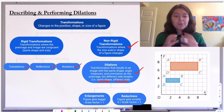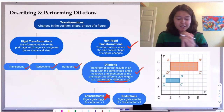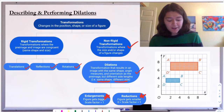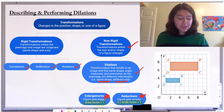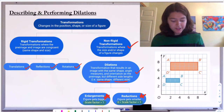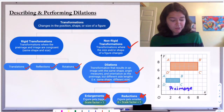When we dilate a shape, we're resizing the shape. We're either making it bigger, which is called an enlargement, or we're making it smaller, which is called a reduction. We'll be dealing with those more technically by looking at the scale factor. When we have a scale factor greater than one, our shape is going to get bigger. We have ABCD as our pre-image, and it is getting dilated about the origin by a scale factor of two.